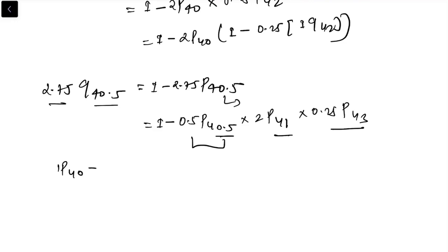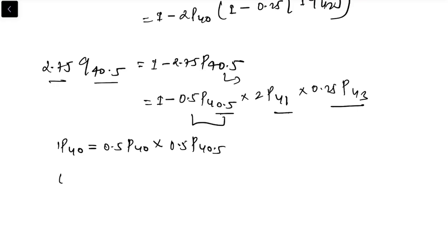So can I write 1 p40 equals 0.5 p40 times 0.5 p40.5? Now from this equation, 0.5 p40.5 is equal to 1 p40 divided by 0.5 p40.